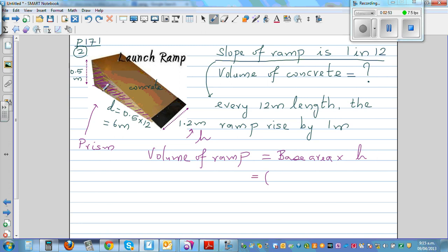Base is 6 meters and height is 0.5 meters. So I like to write the formula like this: base times height, which is 6 meters times 0.5 meters, divided by 2. This is the area of the triangle. And then you times it by the height, which is 1.2 meters.